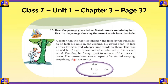This is Activity 10 found on page 32, Chapter 3, Unit 1 in Class 7 for the Kerala syllabus. The activity is asking us to read the passage given below — certain words are missing in it — and rewrite the passage by choosing the correct words from the circle.